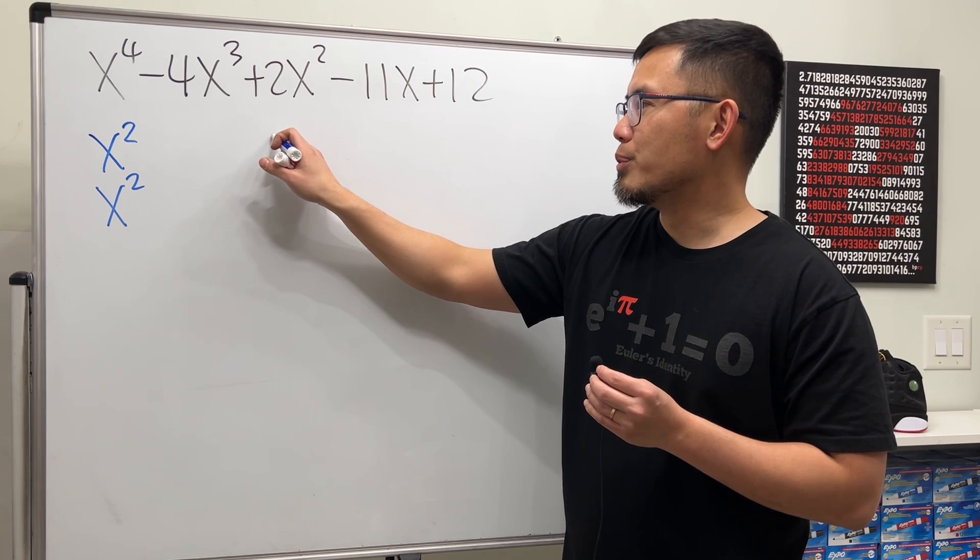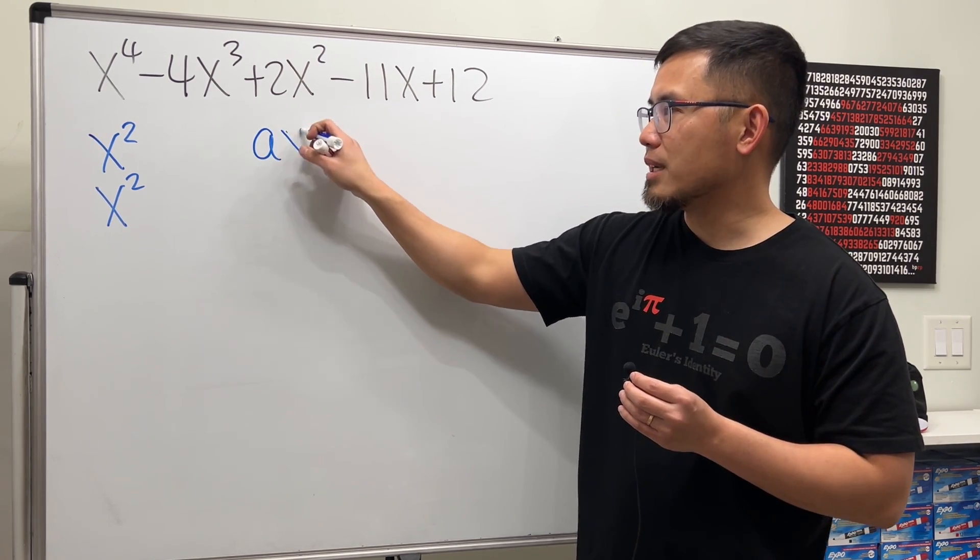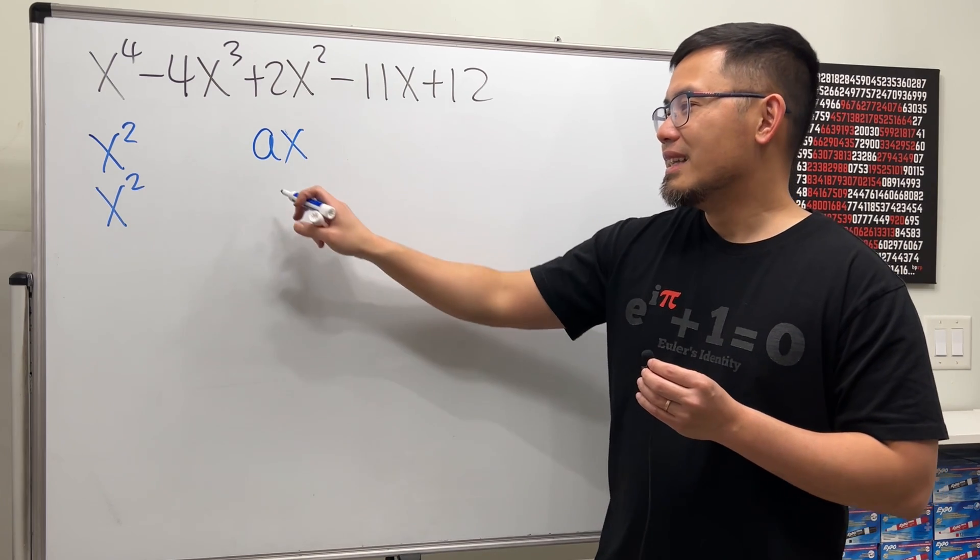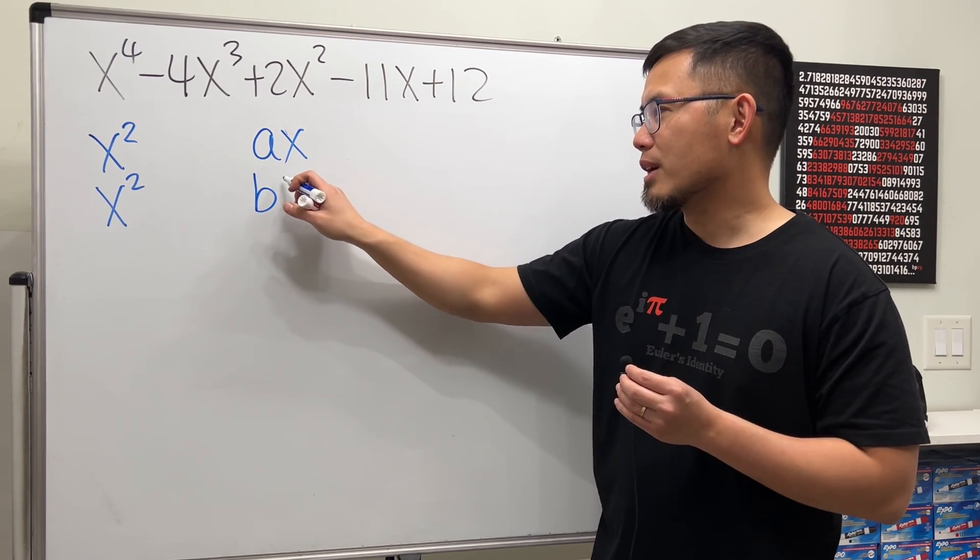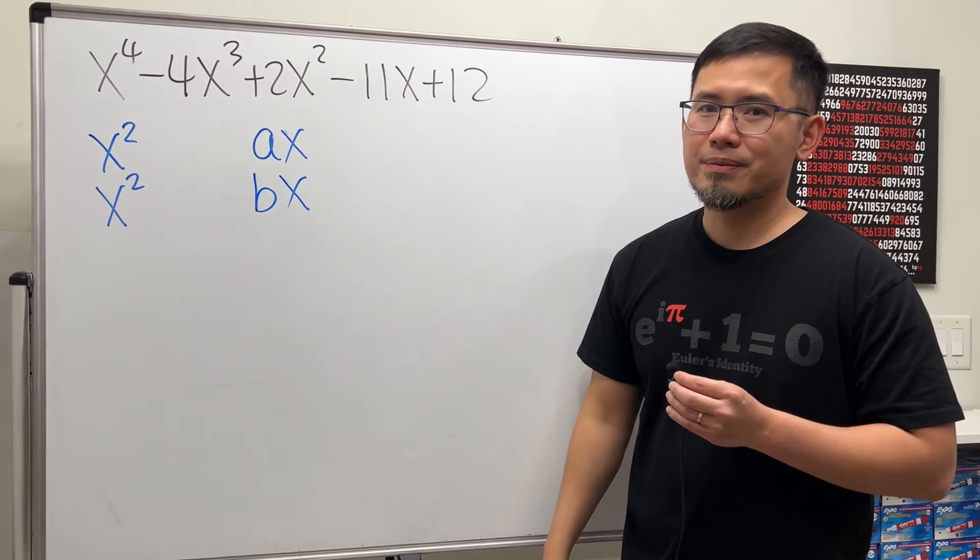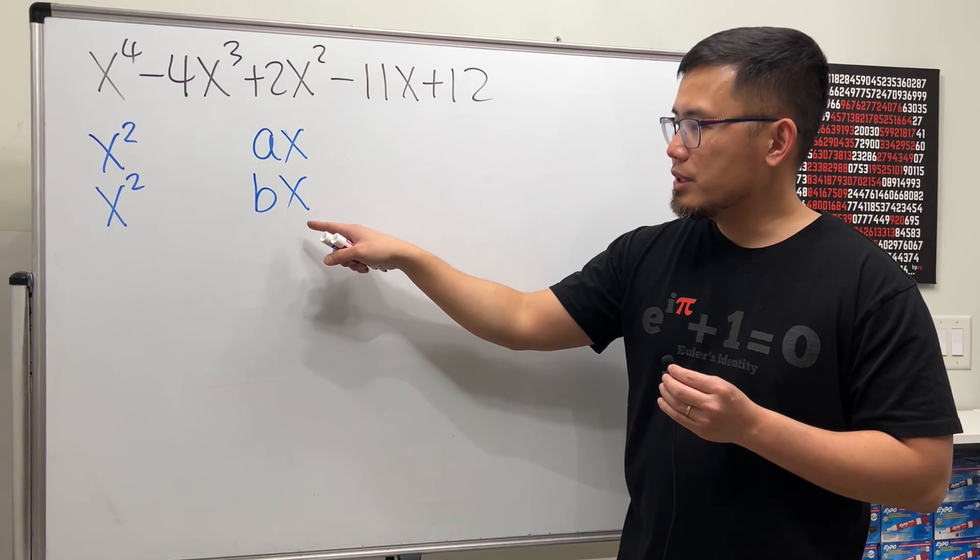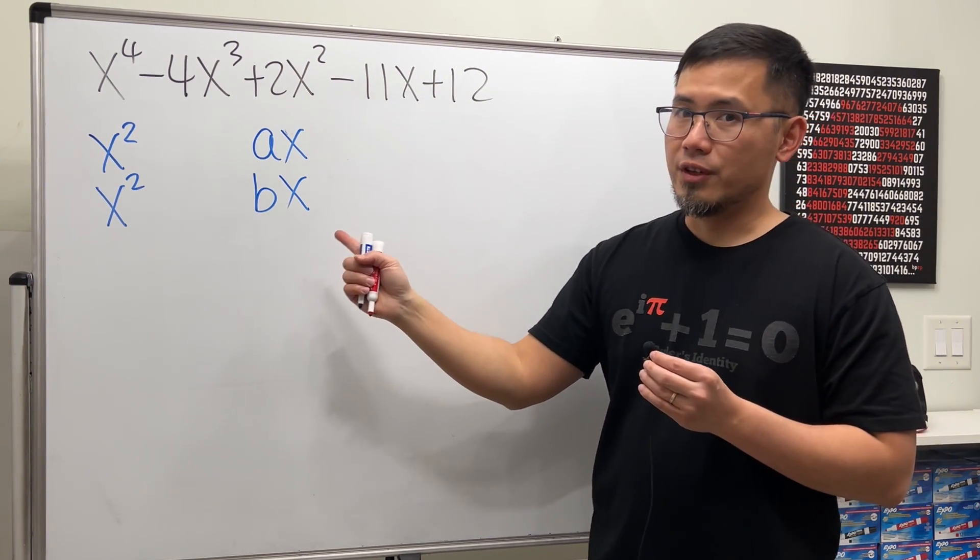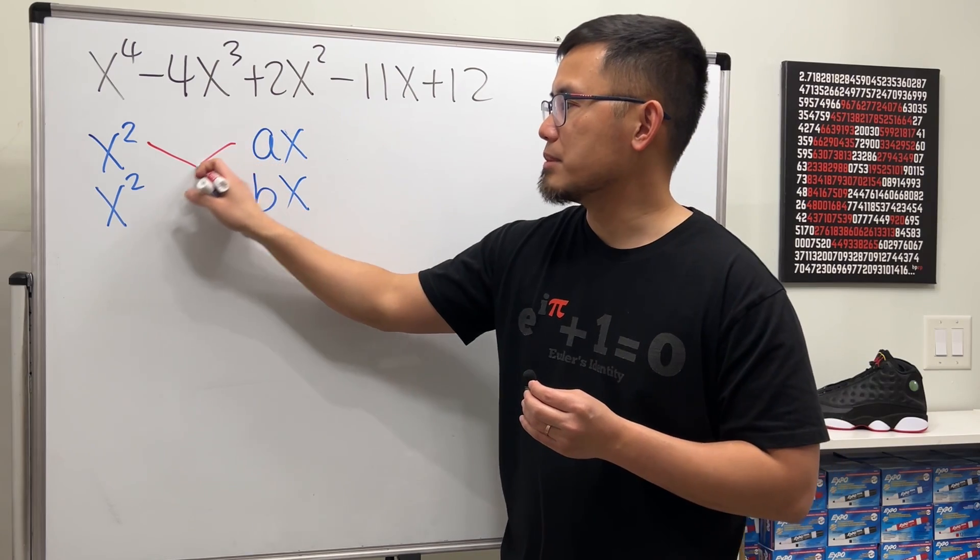So I'm actually going to put down some unknown constant a times x, because we don't know what this is yet. Likewise for this, another unknown constant b times x. Once we put this down, we are going to do the first cross, which is this times this, and this times that.